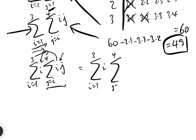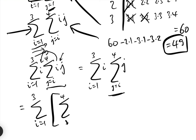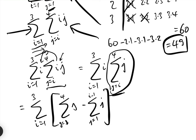That becomes equal to the sum between i equals 1 and 3 of i, times the sum between j equals i and 4 of j. And the sum between j equals i and 4 can be rewritten as the sum from j equals 1 to 4 of j, take away the sum from j equals 1 to j equals i minus 1 of j. So the sum between j equals i and 4 is the sum between j equals 1 and 4, minus the sum between j equals 1 and i minus 1.